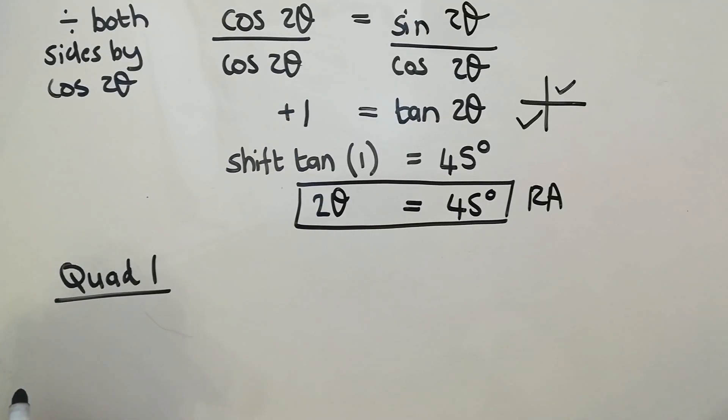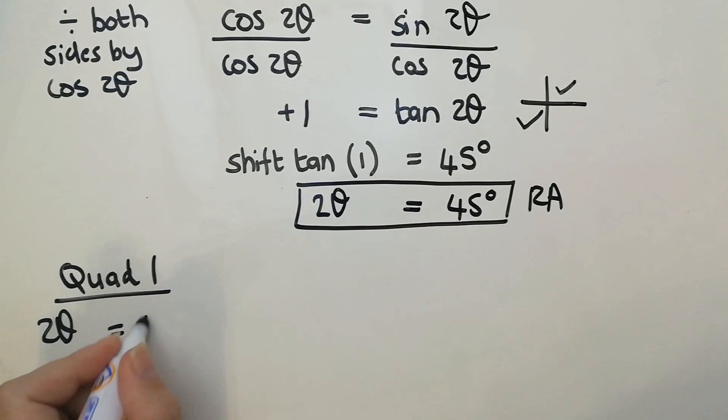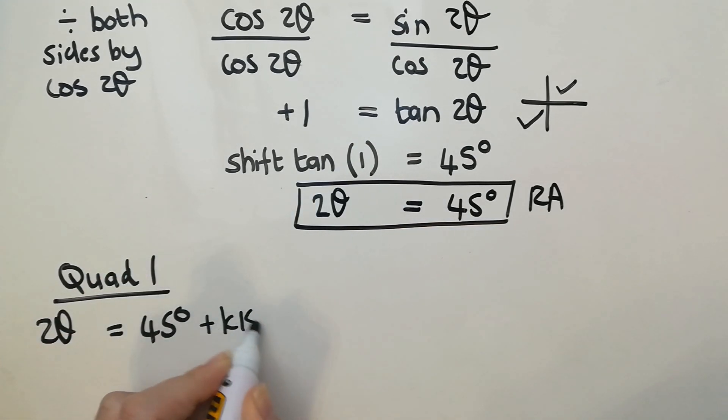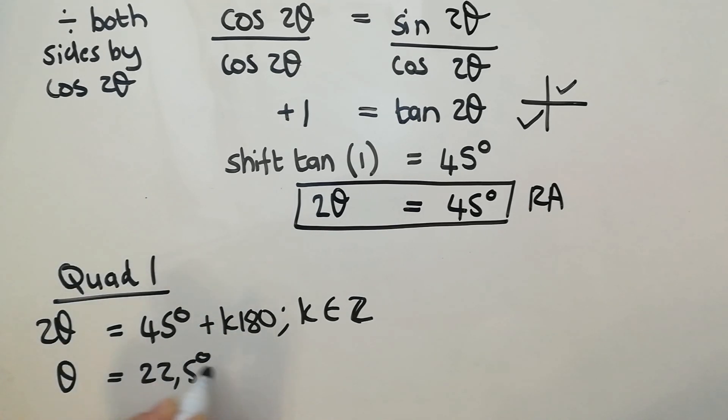So quad one is the reference angle. So in quad one, I'm just going to have 2θ equals 45 degrees. This is a tan equation. It's become one. So it's going to be plus k·180. And I'm going to say k is an element of integers. And then I can solve from there. So θ is going to be 22.5 degrees plus k·90.